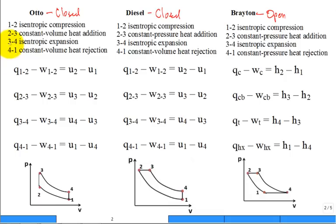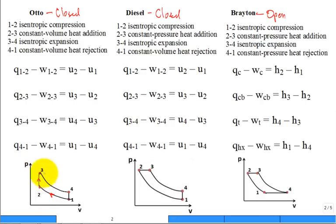Here are the processes visualized on a PV diagram. For the Otto cycle: 1 to 2 is isentropic compression; 2 to 3 is constant volume heat addition; 3 to 4 is isentropic expansion; and 4 to 1 is constant volume heat rejection.